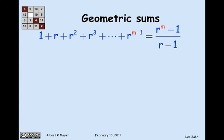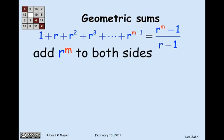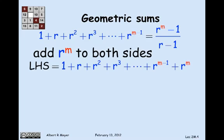So now we take the obvious strategy. What I'm interested in is properties of the sum of the powers up to r to the m. Now, the left-hand side is the powers up to r to the m minus 1. So there's an obvious strategy for turning the left-hand side into what I'm interested in. Namely, let's add r to the m to both sides. So the left-hand side becomes just the sum that I want, and the right-hand side becomes this messy thing, r to the m minus 1 over r minus 1 plus r to the m.